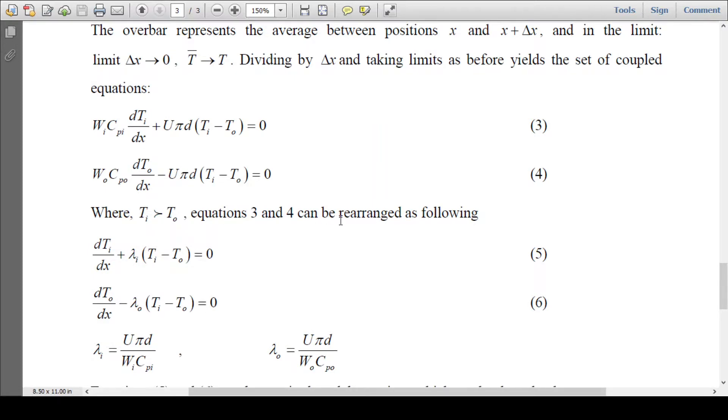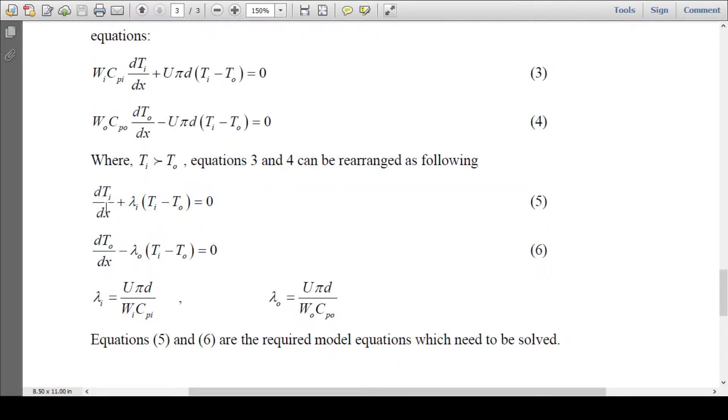Since the temperature TI is always greater than T0, equations three and four can be rearranged in this particular format: dTI/dx plus lambda I times (TI minus T0) equals zero.